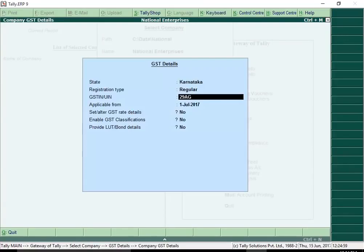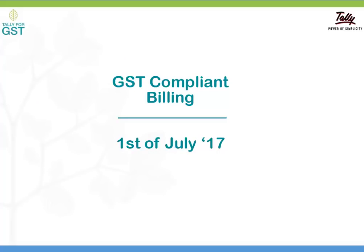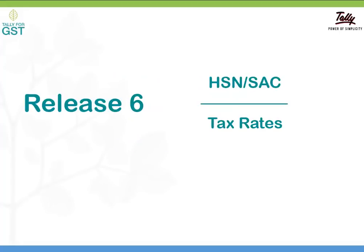One of the first things to do is recording your company's GSTN number. Let's take a look at how to begin GST compliant billing from July 1st. Release 6.0 provides you an easy way to specify HSN or SAC codes and tax rates on a single screen.